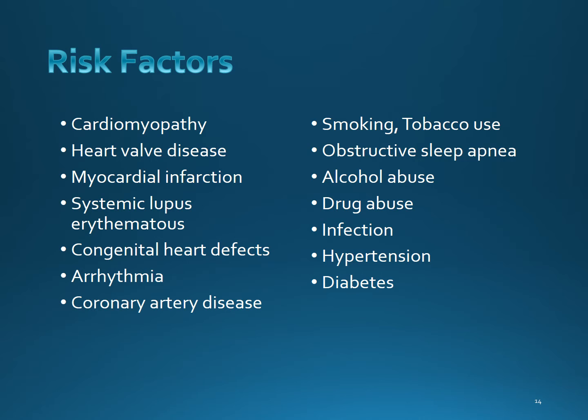Cardiomyopathy, heart valve disease, myocardial infarction, systemic lupus erythematosus, congenital heart defects, and type 1 diabetes we can't do much about. But we can sometimes get rid of an arrhythmia and we can possibly improve the status of coronary artery disease. All the others — smoking, tobacco use, alcohol abuse, drug abuse, infection, hypertension, and diabetes type 2 — are all modifiable with lifestyle changes.